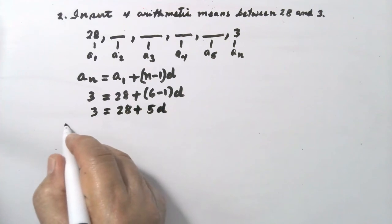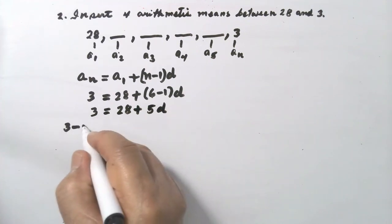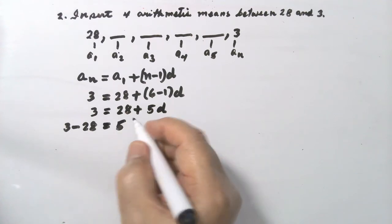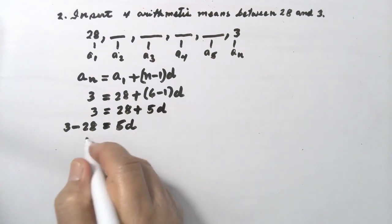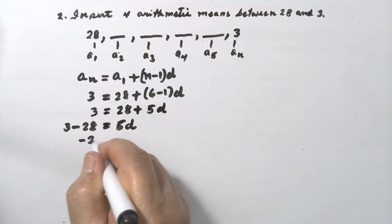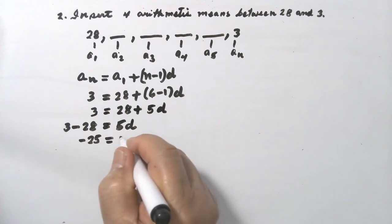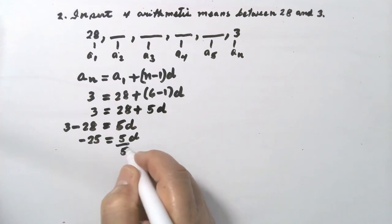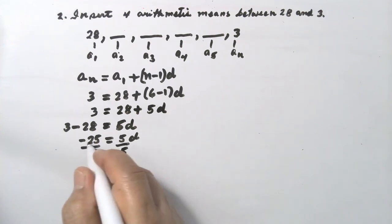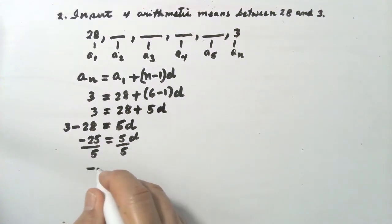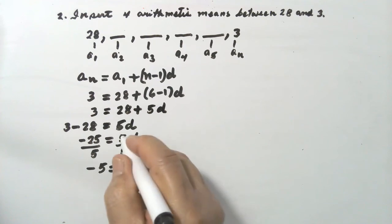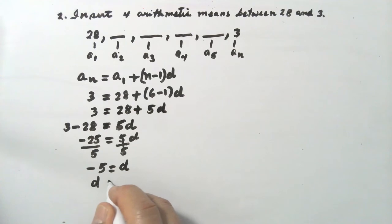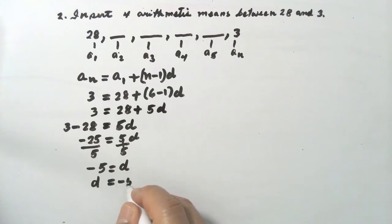Solve for d. Transpose 28 to the left side — it becomes negative 28 — so negative 25 equals 5d. Divide both sides by 5: negative 25 divided by 5 is negative 5. So d equals negative 5. The common difference is negative 5.